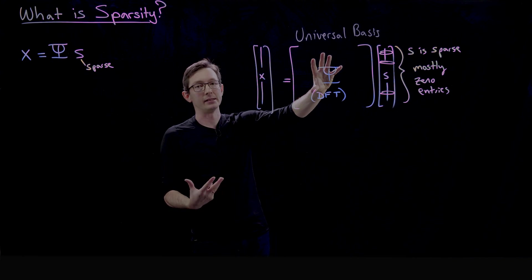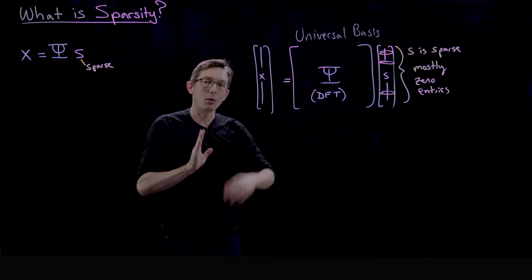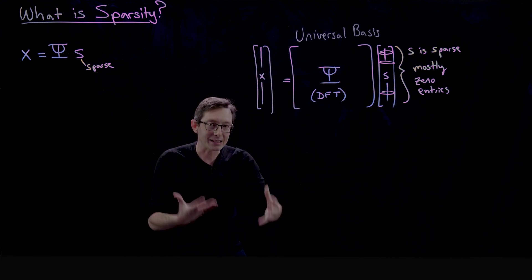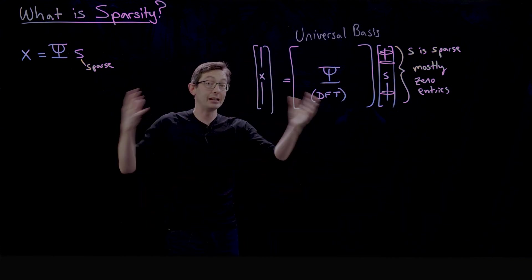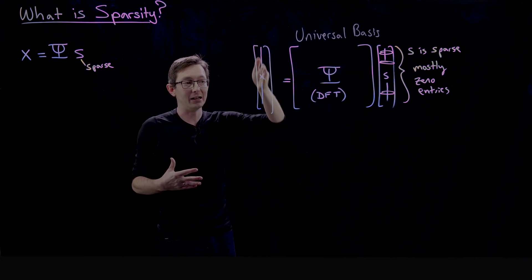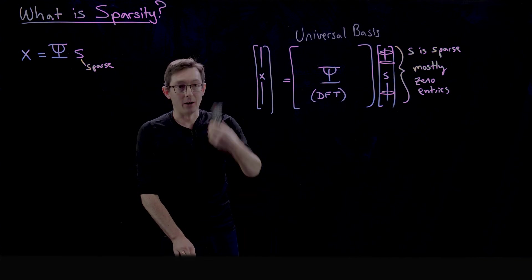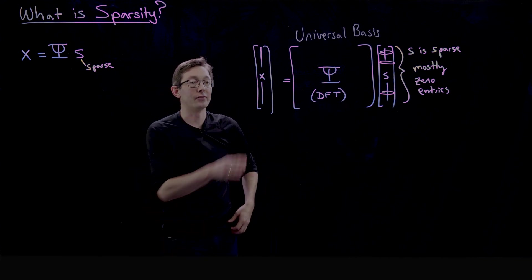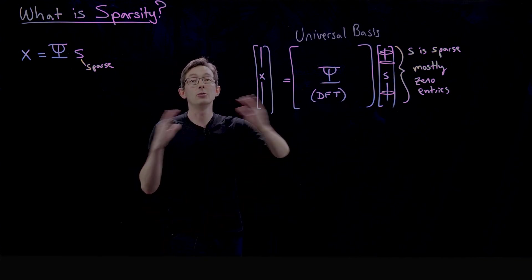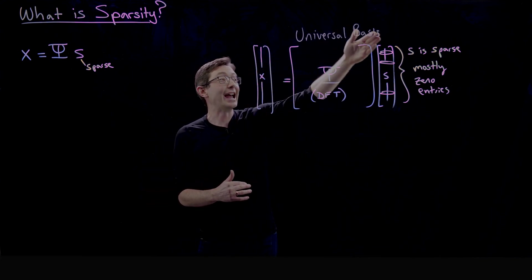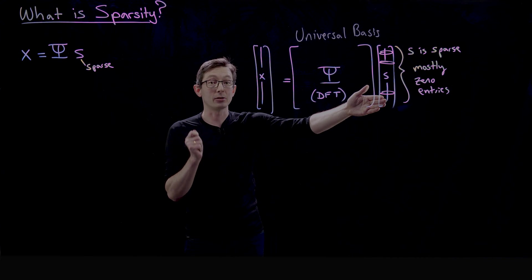And to some extent, this basis being universal gives us the flexibility of representing any natural image sparsely. So this could be an image of a face, a remote control, a dog, a cat, a coffee cup—you name it. It can be represented in this Fourier basis, and chances are if it's a natural image it happens to be sparse in that Fourier basis.